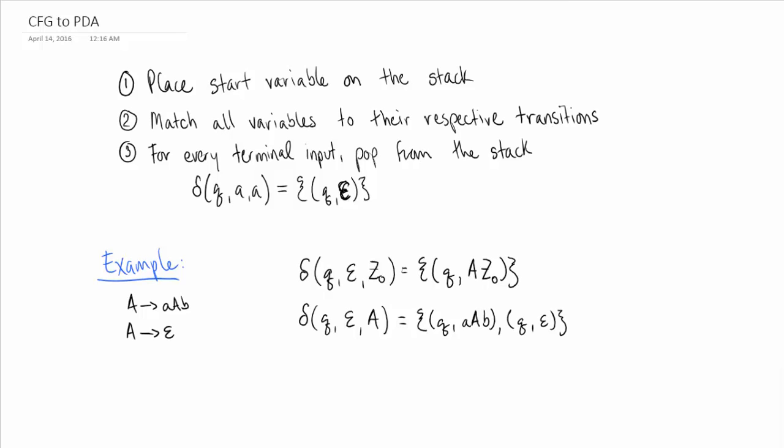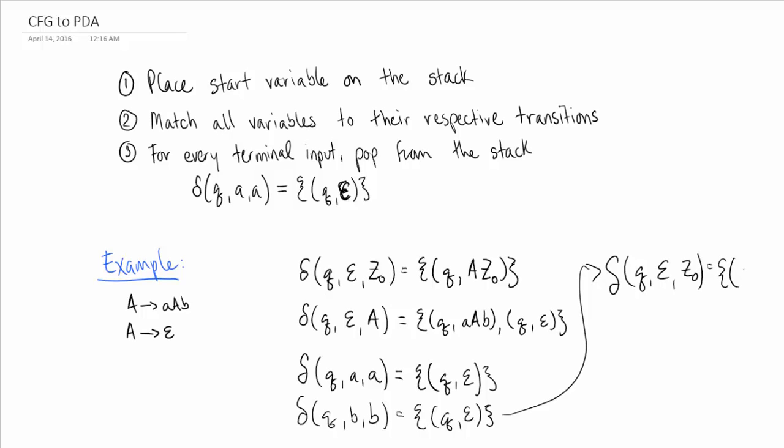And now on to step three for each, for every terminal input pop from the stack. So we only have three terminals, including epsilon. So on Q, if we've got an A, and A is on the stack, then we're at Q again. Pop. And last but not least, we account for the epsilon. And again, we do the empty stack symbol instead. And we pop.